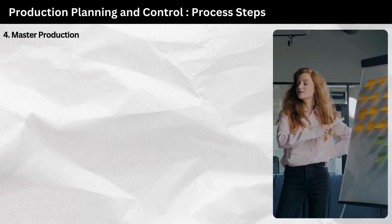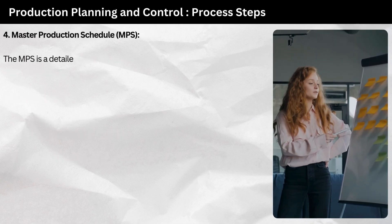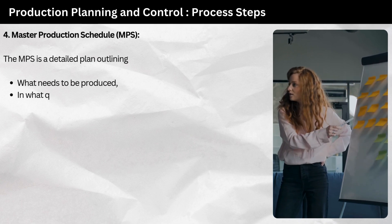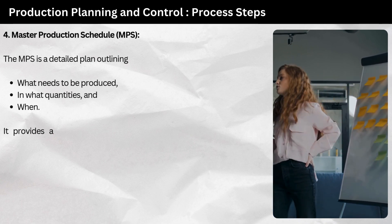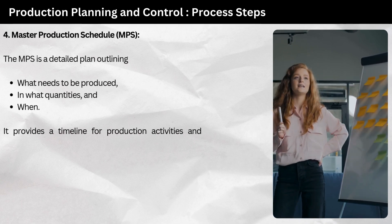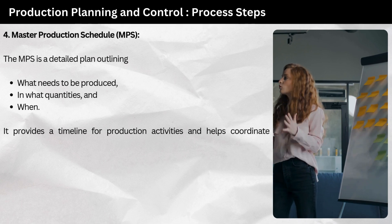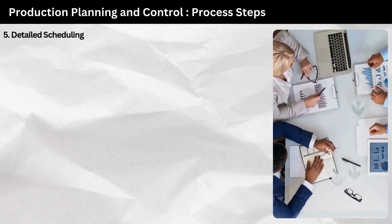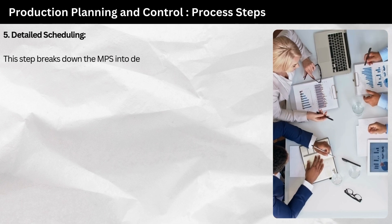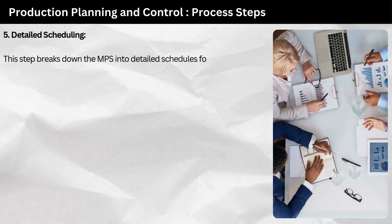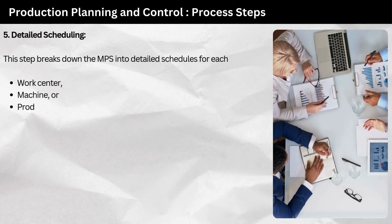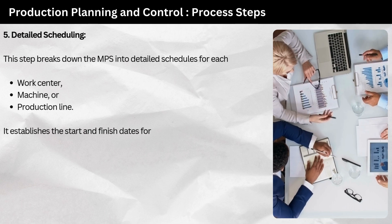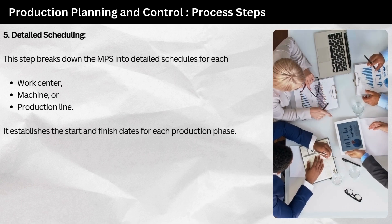Step 4: master production schedule (MPS). The MPS is a detailed plan outlining what needs to be produced, in what quantities, and when. It provides a timeline for production activities and helps coordinate resource allocation. Step 5: detailed scheduling. This step breaks down the MPS into detailed schedules for each work center, machine, or production line, establishing the start and finish dates for each production phase.